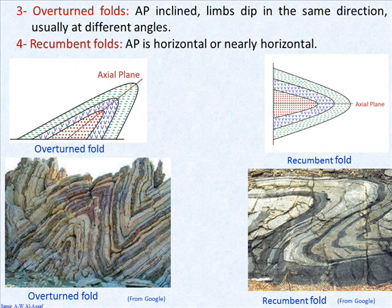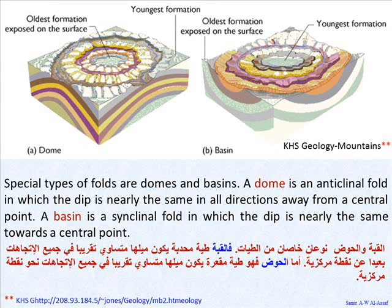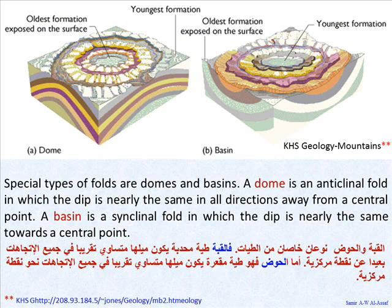3. Overturned folds — the axial plane is inclined, and the limbs dip in the same direction, usually at different angles. 4. Recumbent folds — the axial plane is horizontal or nearly horizontal. 5. Special types of folds are domes and basins. A dome is an anticlinal fold in which the dip is nearly the same in all directions away from a central point. A basin is a synclinal fold in which the dip is nearly the same towards a central point.